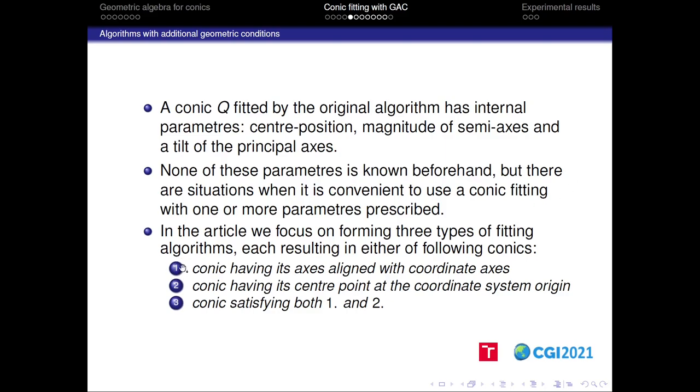In particular, it is the center position, the magnitude of its semi-axis and the tilt of its principal axis. Well, with the original algorithm, none of these parameters is known beforehand, but there are situations when we simply want to prescribe some additional geometric condition to the fitted conic. In the article, we focused on three special types of these additional geometric conditions.